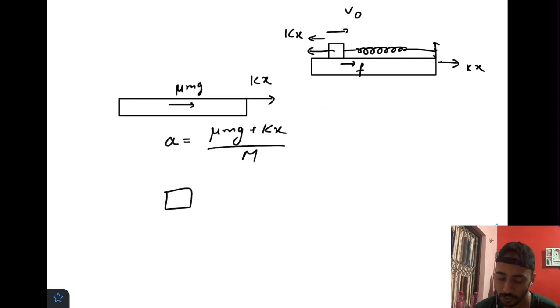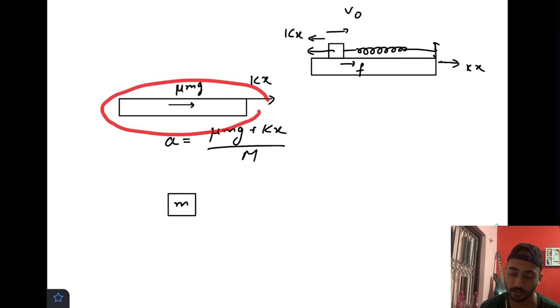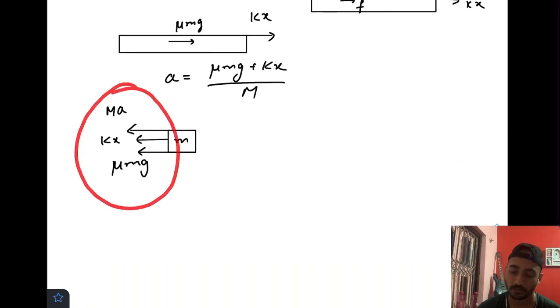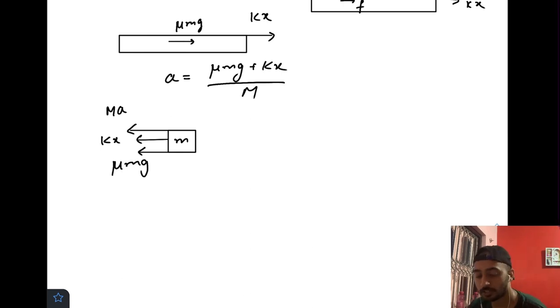If I draw the free body diagram of the small mass m, the force acting on this small mass while we observe standing on the plank: there would be a spring force towards left, there would be a frictional force towards left, and there would be a pseudo force also that is m times small a. All these three forces try to oppose the motion of small m and reduce the velocity to zero.